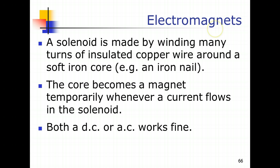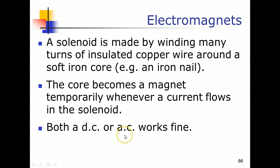An electromagnet is simply made up of a soft iron core around which a solenoid is placed. A solenoid is made up of many turns of insulated copper wire. If you put this around a soft iron core and the wires are linked to an electrical power supply — either DC or AC — that is what we call an electromagnet.